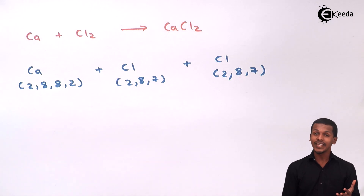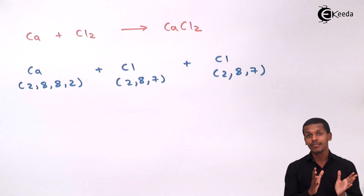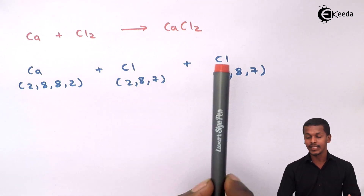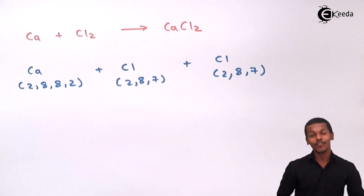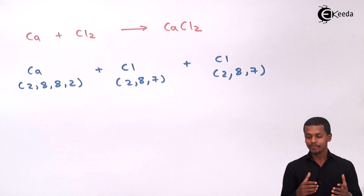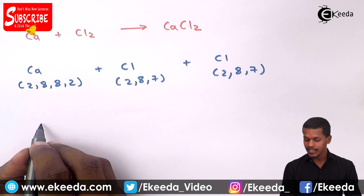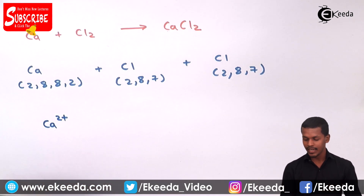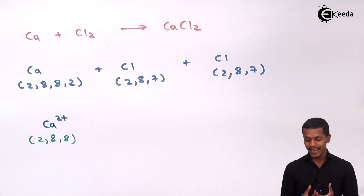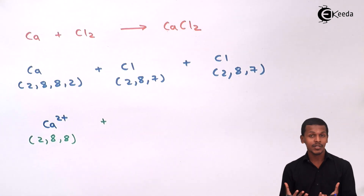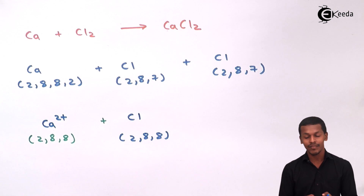Chlorine atoms need electrons. The 2 electrons given by calcium are distributed so that one electron is accepted by one chlorine atom and the other electron is accepted by the second chlorine atom. This maintains the octet of all three atoms, like noble gases. Calcium converts to Ca²⁺ with configuration 2,8,8. Each chlorine atom accepts one electron, giving it configuration 2,8,8 and a negative charge (Cl⁻).